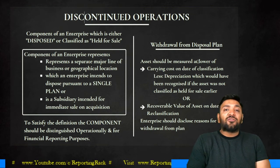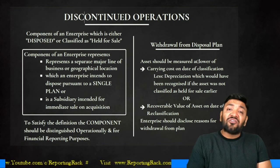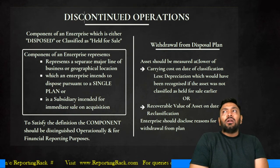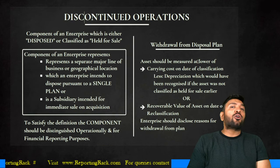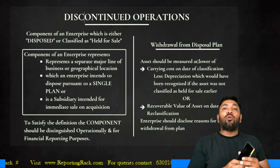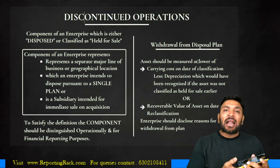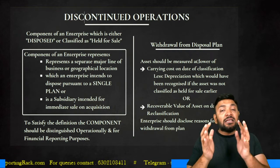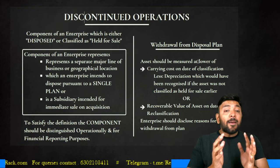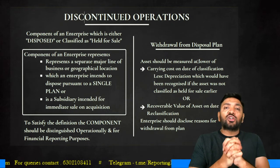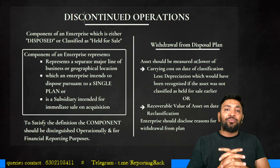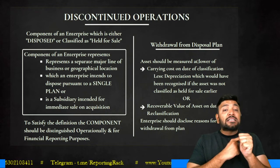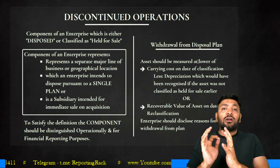A discontinued operation arises when a component of an enterprise is either disposed of or classified as held for sale. A component of an enterprise is a part that represents a separate major line of business or a geographical operation. For example, a clothing retailer shutting down its North India operations due to geographical unsuitability, or closing its men's clothing line while continuing women's clothing, illustrates disposal of a major line of business or geographical location.